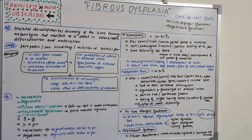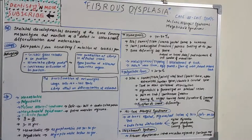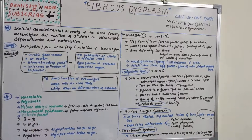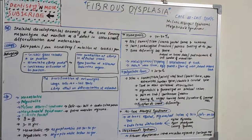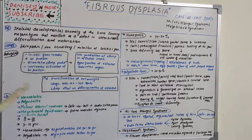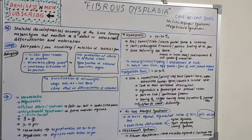By definition, fibrous dysplasia is a skeletal developmental anomaly of the bone-forming mesenchyme that manifests as a defect in osteoblastic differentiation and maturation. The most important factor here is the osteoblast. Unlike Paget's disease, which involves both osteoblastic and osteoclastic activity, fibrous dysplasia mainly concerns osteoblastic differentiation and maturation, leading to fibrous replacement of bone.